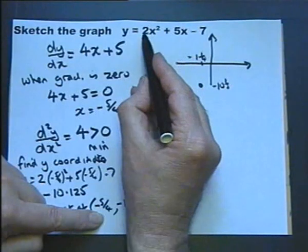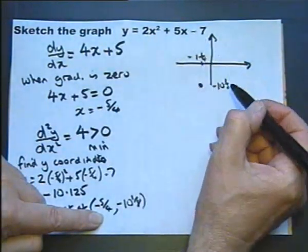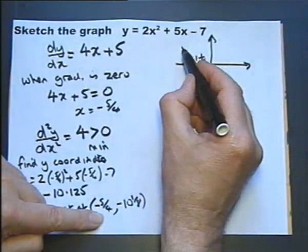We can also put x equals 0 into there to get minus 7, so we know it goes through there. And there's our sketch.